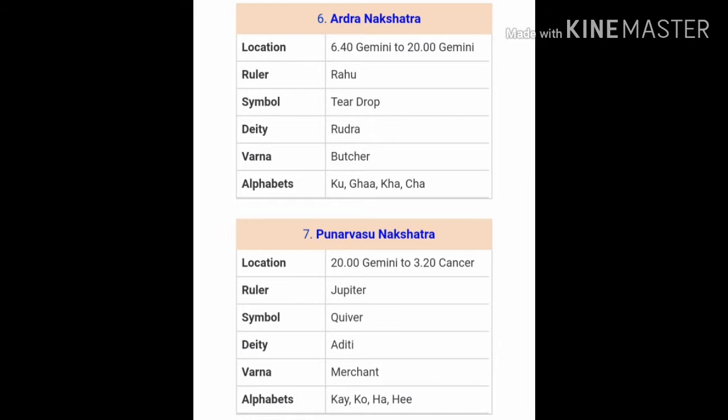The seventh Nakshatra is Punarvasu, which falls partly in the sign of Gemini and partly in Cancer, and is ruled over by Guru or Jupiter. The term Punarvasu represents a quiver of arrows — a place where arrows can be stored while fighting a war. Punarvasu means to refill something. These people are full of energy, always happy, enthusiastic and ready to do anything. These are genuinely good people.